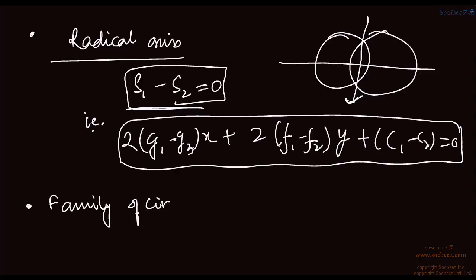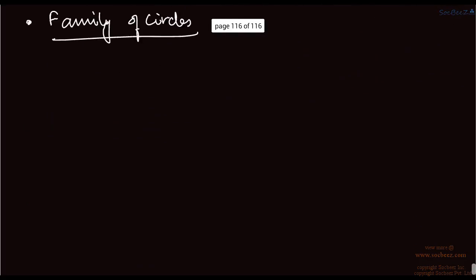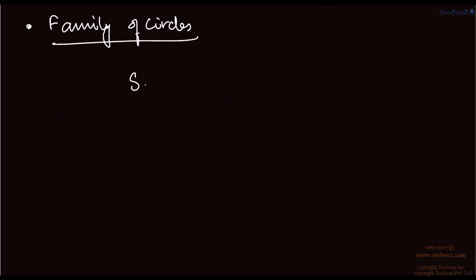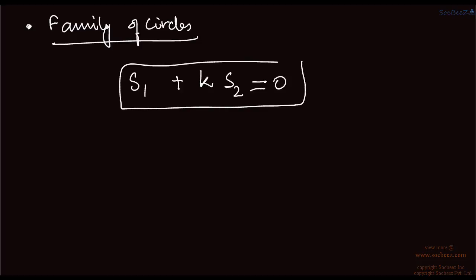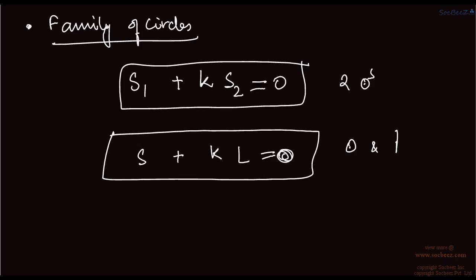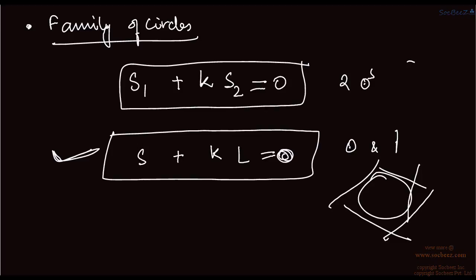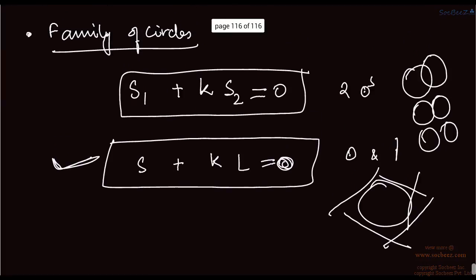One more important topic is the family of circles. If you have two circles S1 and S2, you can write the family as S1 plus k·S2 equals 0. If you have a circle and a line, you can write S plus k·L equals 0. A circle and a line can form many different circle equations, so these family-of-circles equations represent all possible such configurations.